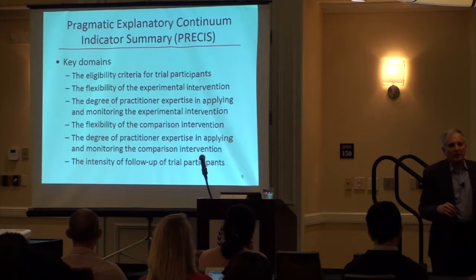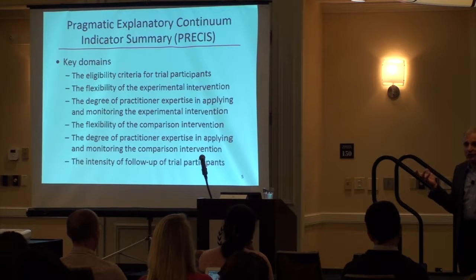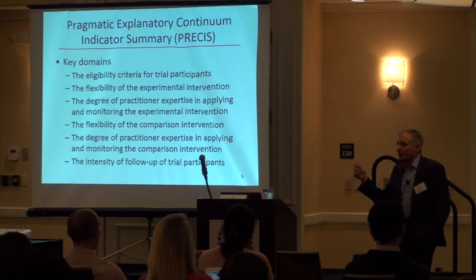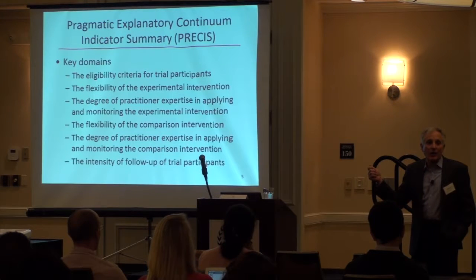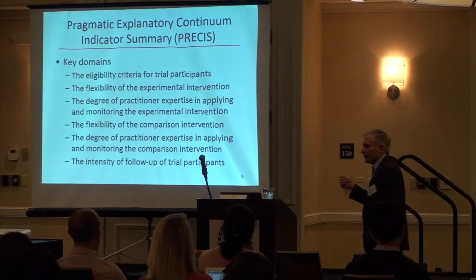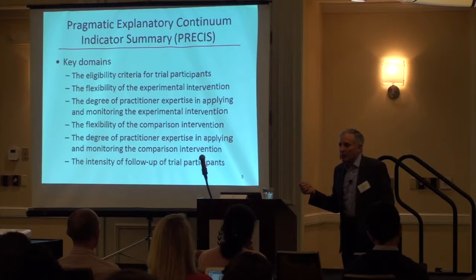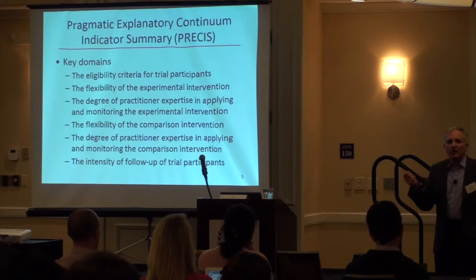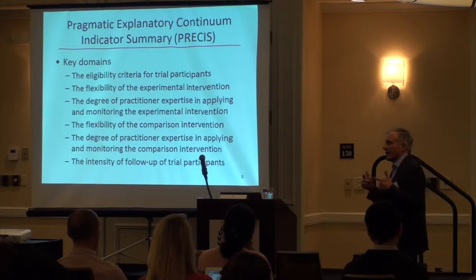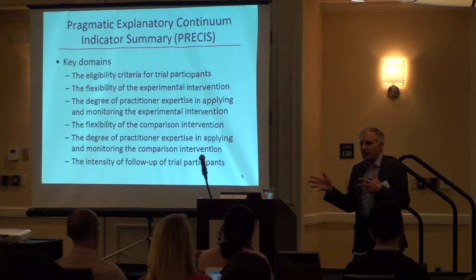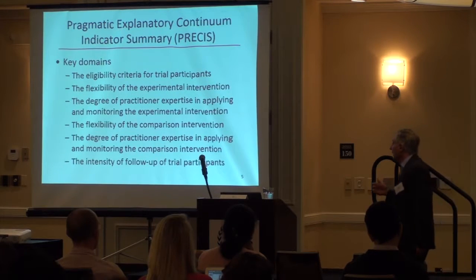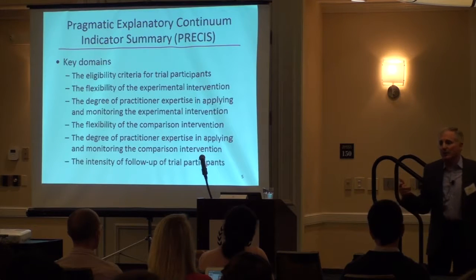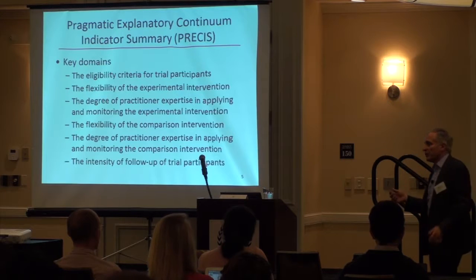The degree of practitioner expertise: think of stroke trials where they only allow very high-volume centers with good quality improvement programs to perform interventions, because they want the highest possible technical expertise. But does that tell you how well that technique will work once it's on the market and being used by much lower-volume centers and practitioners? In a pragmatic trial, you want the population of practitioners to represent the actual range of practitioners — with all the good and bad — who would be using that therapy in real practice.